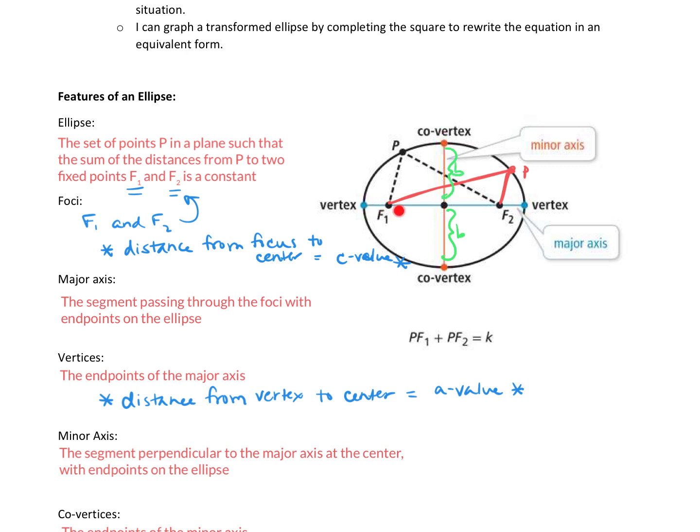Your major axis, those are the same distance to the center, that is what your A value is going to be. And then the focus, either focus, the distance from the focus to the center, that is your C value. And that would be the same on either side.